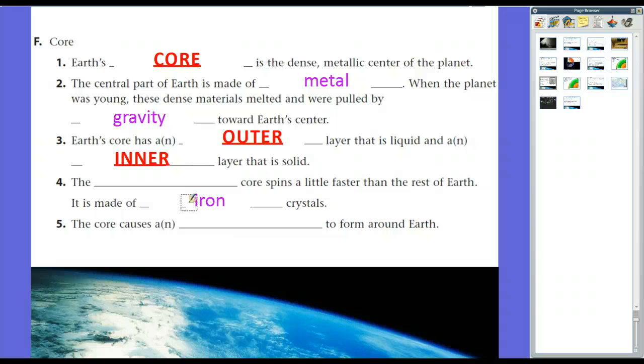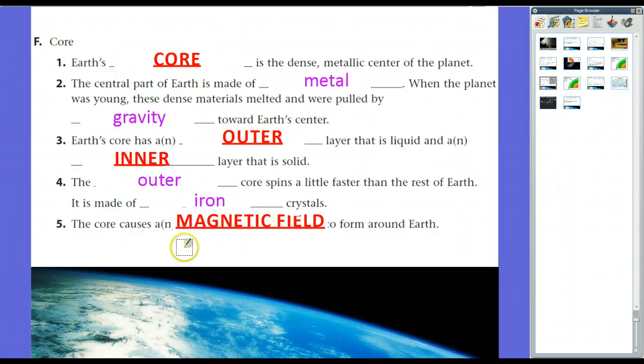Now, the outer core itself, because of its pressure and its temperature, actually makes it liquid. It's plastic, much like the mantle in the asthenosphere. So the outer core, because it's liquid, will actually spin a little bit faster than the rest of the Earth. And the core spinning, and this differential in speed, causes a magnetic field to form around the Earth. So the Earth has a magnetic field, just like a magnet, which we'll talk about in a second.